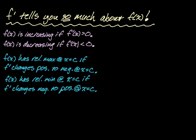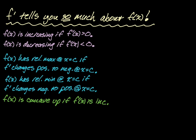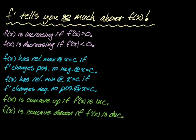Beyond that, there's even more. f of x is going to be concave up — meaning the tangent line is below the curve — if f prime of x is increasing. And the flip side is also true: f of x is going to be concave down if f prime of x is decreasing. We're going to use those facts a ton.